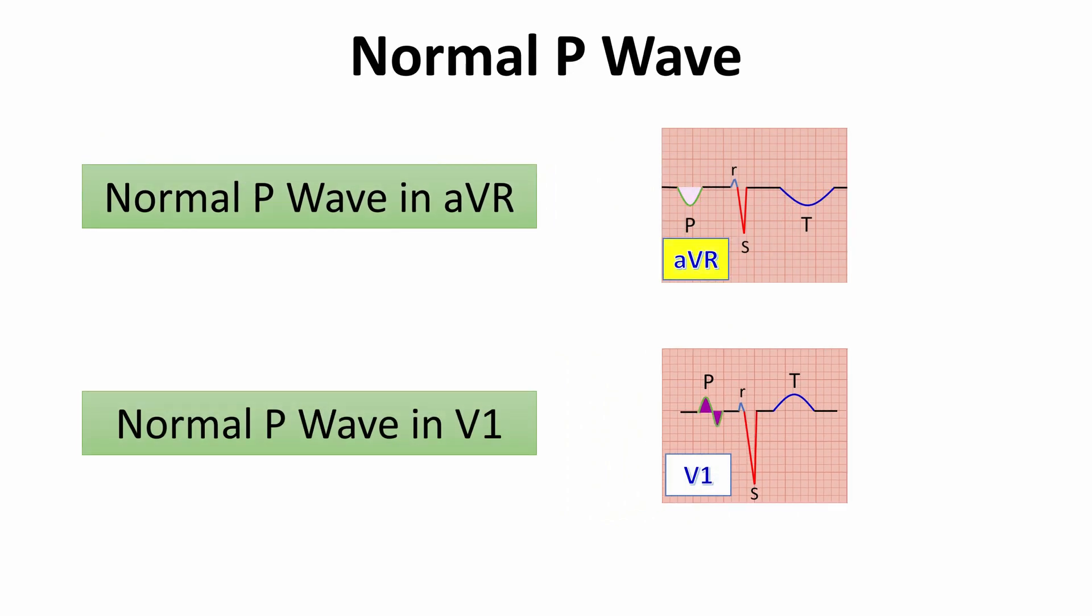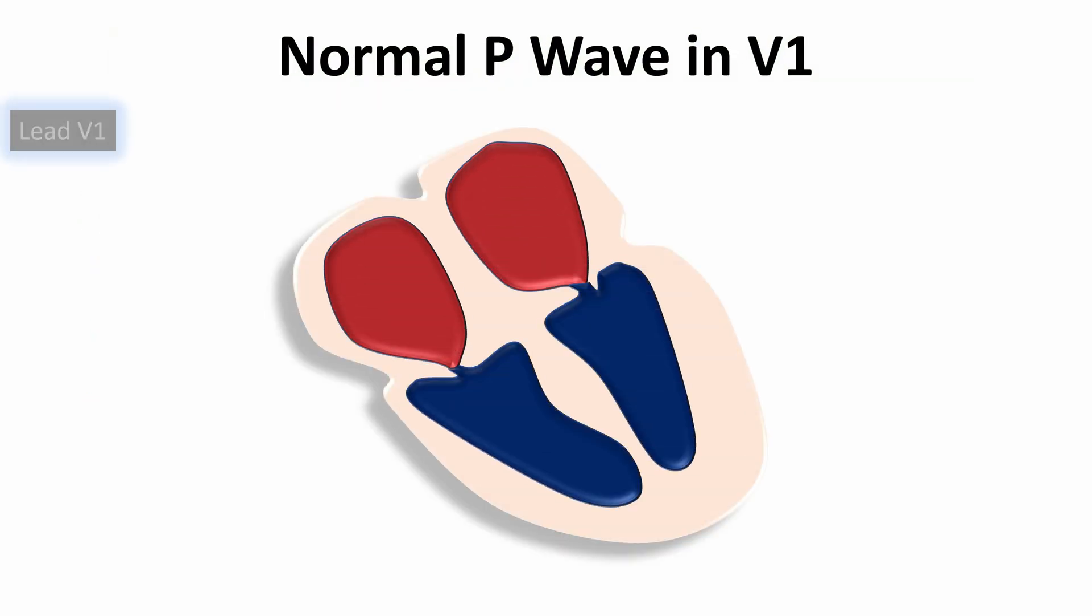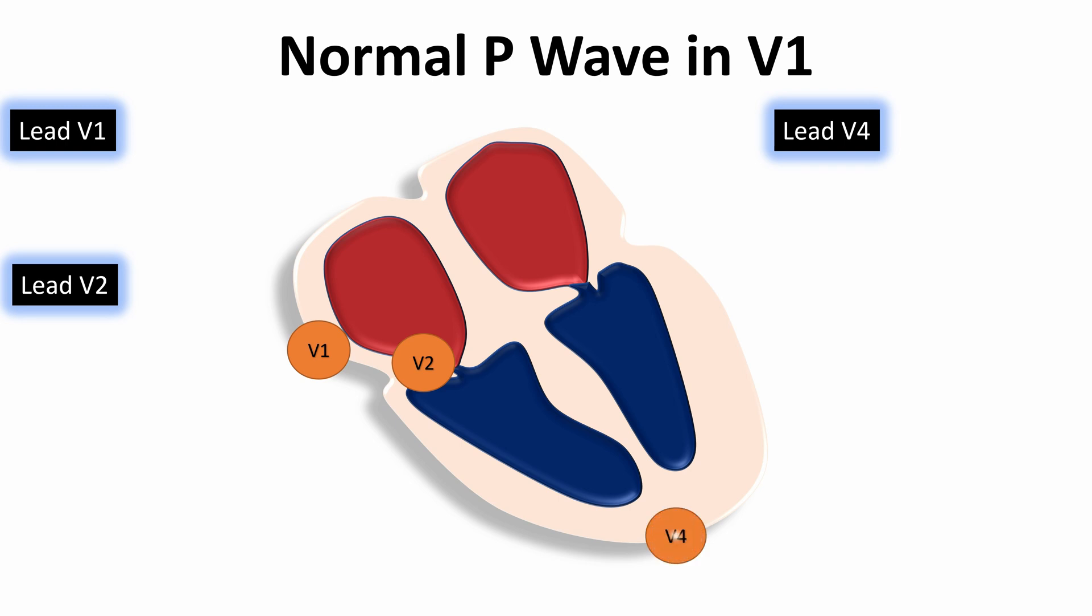Then why is the P wave in lead V1 biphasic? Most chest leads look to the heart from the apex and in the direction of atrial activation, so they will draw a positive P wave in most chest leads.